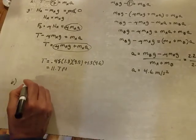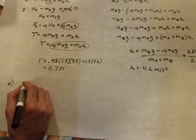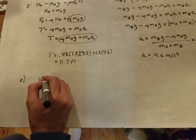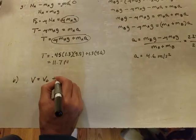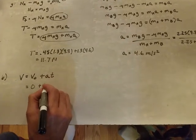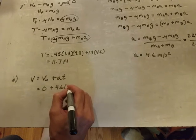And then part B. This is the easiest part. We're looking for the speed the blocks are going to have after three seconds. V equals V0 plus AT. Starts from rest. Our acceleration was 4.6. Does that for three seconds. That gives us 13.8 meters per second.